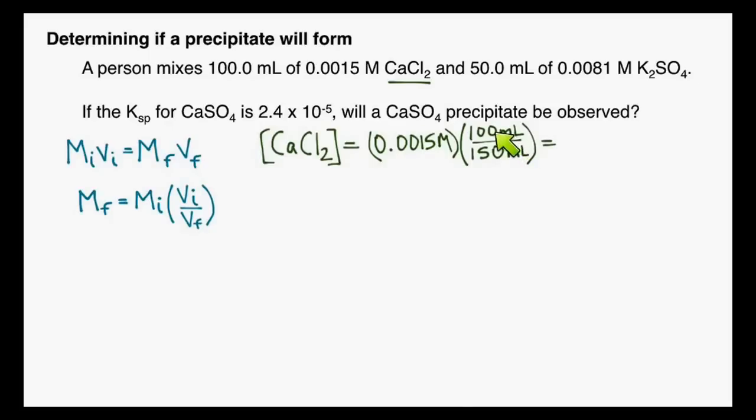In other words, this is a two-thirds ratio. And so our final molarity is going to be two-thirds of what it was in our original solution that we added. And so we get 0.00050 molar.